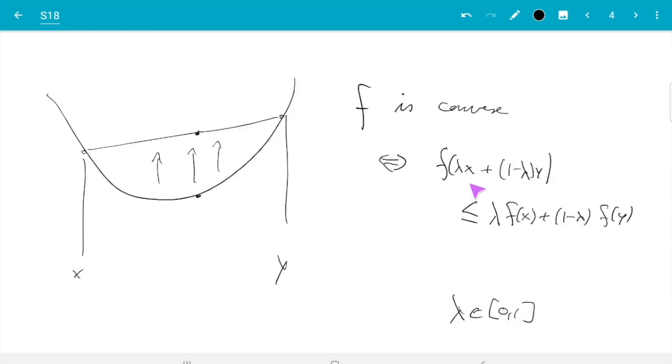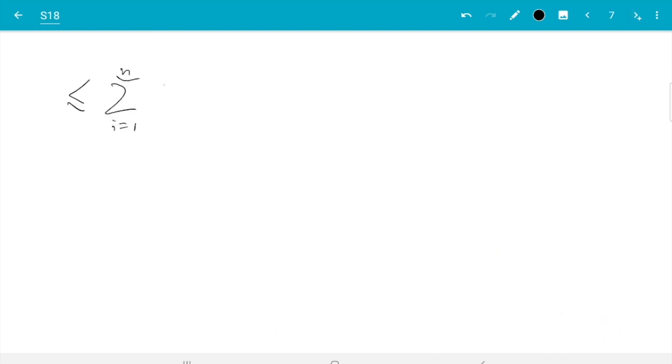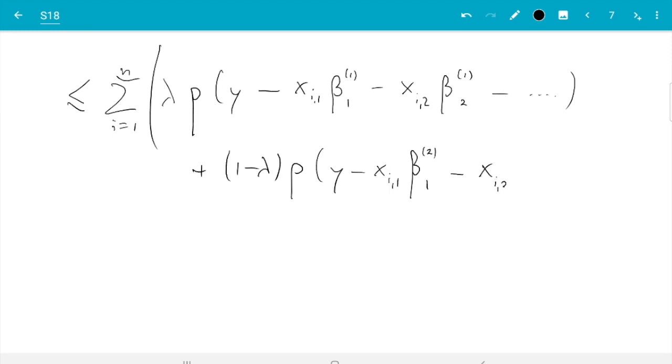And let us just remind ourselves if rho is convex I can make the whole expression larger by taking the sum and the lambdas outside. Go from here to here that means. So what I will get is sum lambda rho this plus 1 minus lambda rho of that. Let us just write that. Lambda rho of Y minus X i 1 beta 1 1 minus X i 2 beta 1 2 plus 1 minus lambda rho Y minus X i 1 beta 2 1 minus X i 2 beta 2 2.